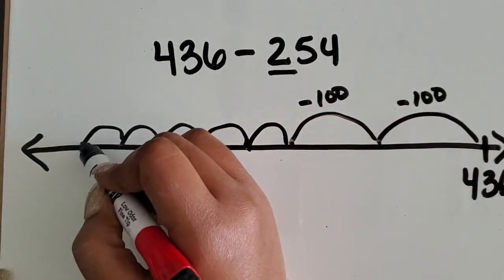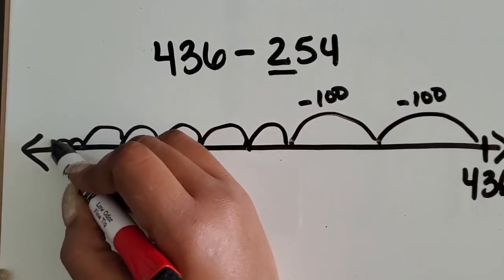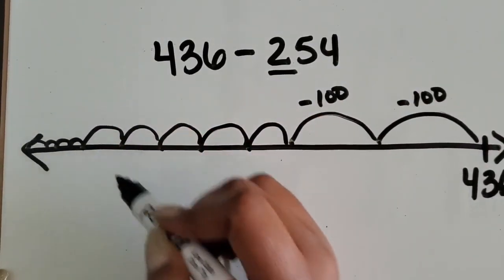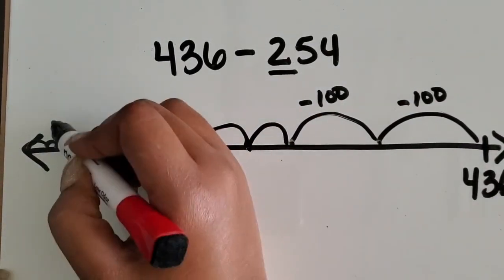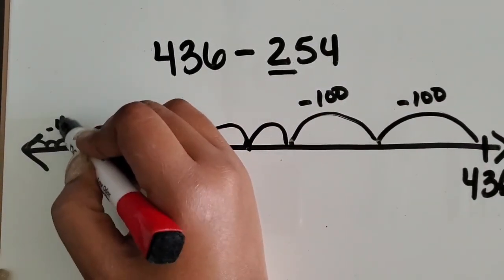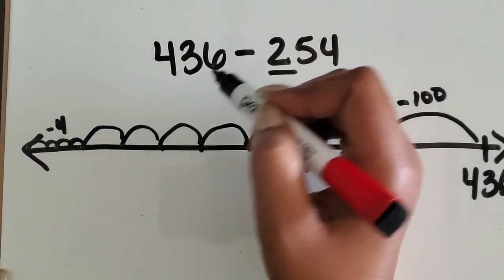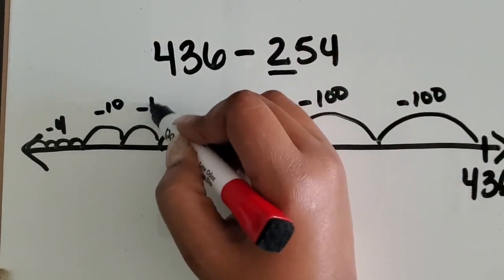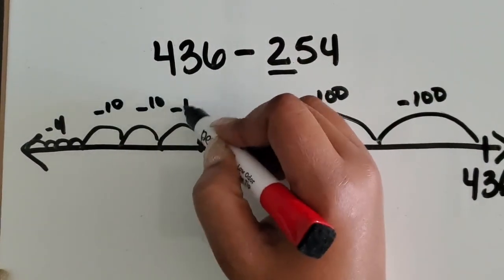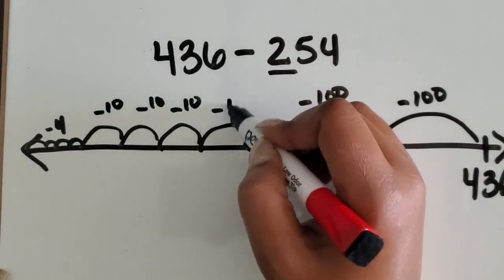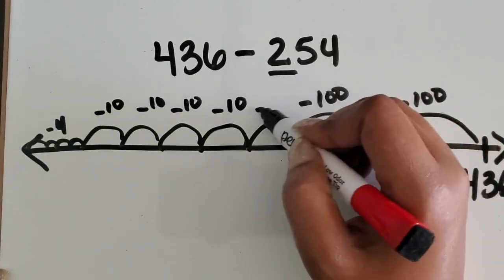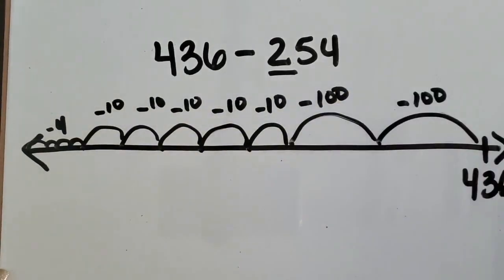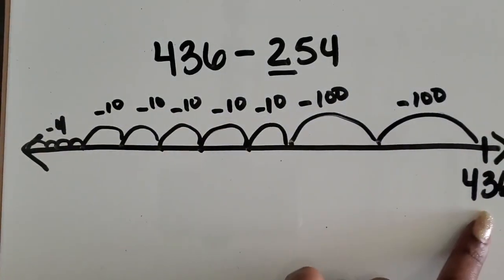Then I'm going to subtract four ones, so that's four. This is five tens, which equals fifty. So let's count backwards.